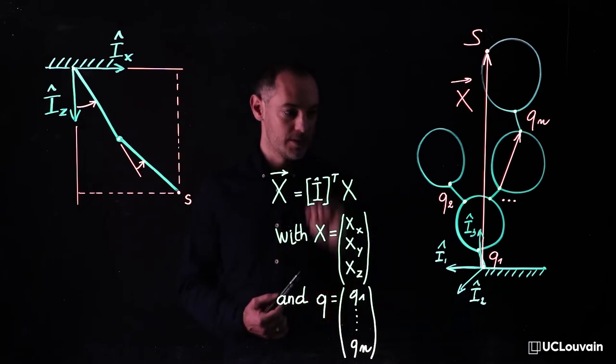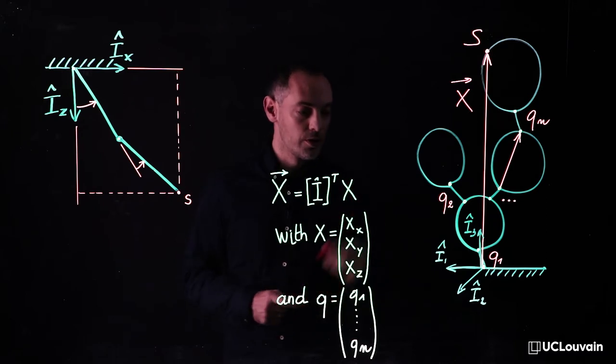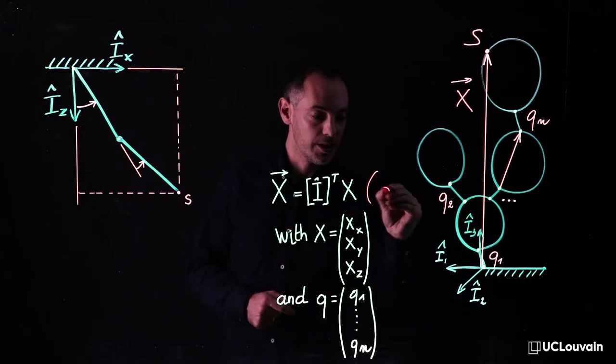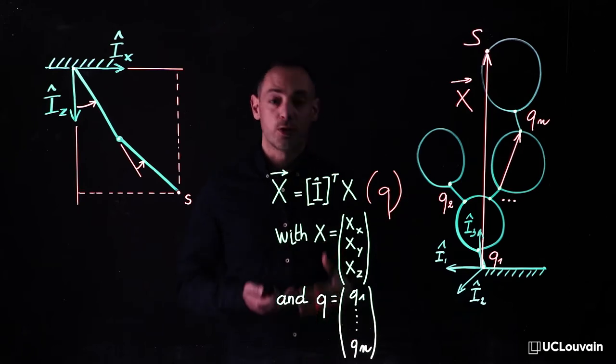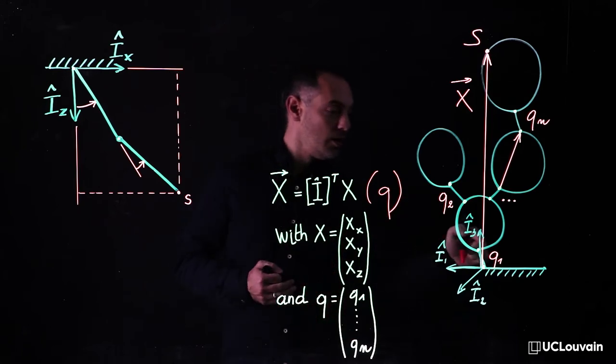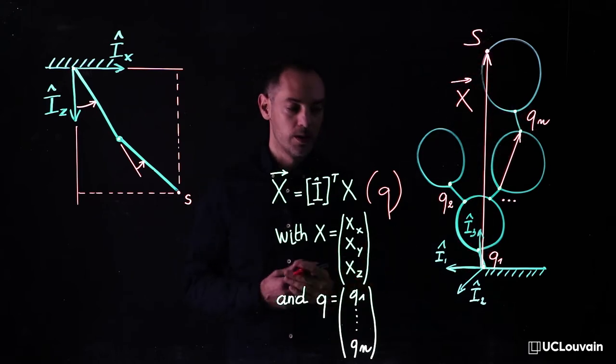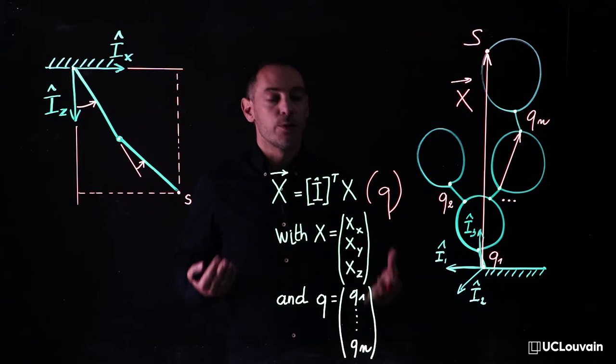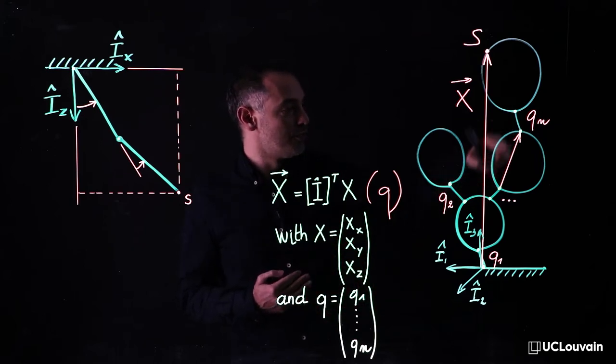the three components x of this vector as a function first of the generalized coordinates q, which denote the set of all joint coordinates from q1 to qn of the system, and secondly of the geometrical parameters of the model, such as the joint position vectors.